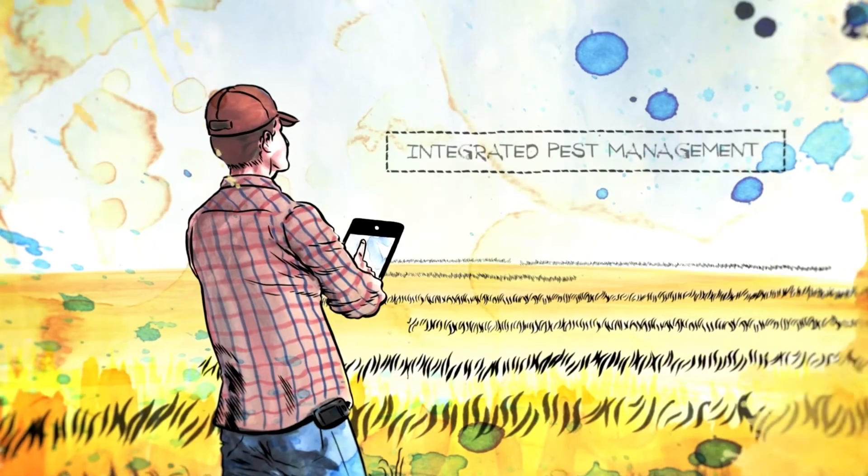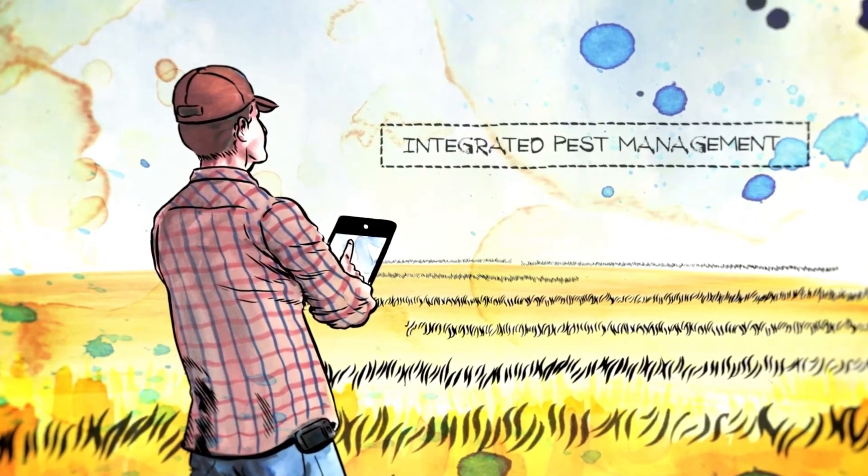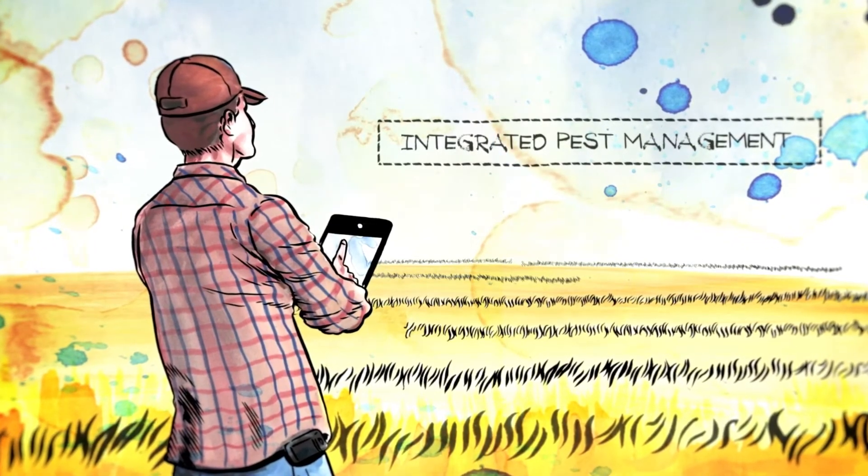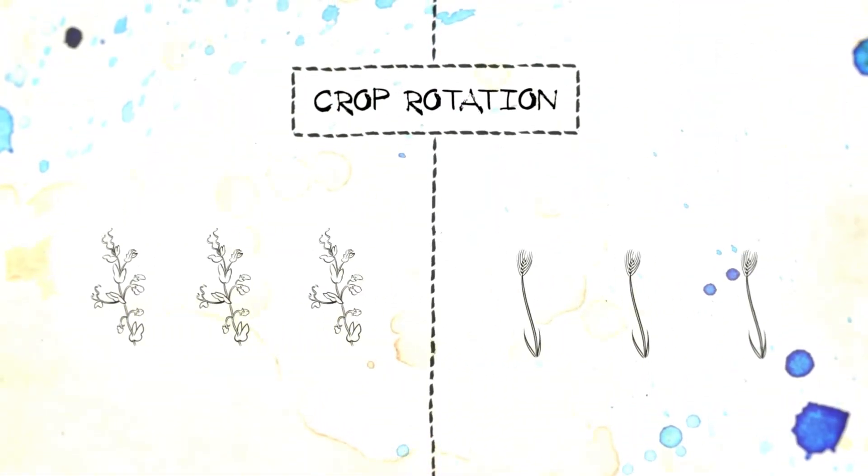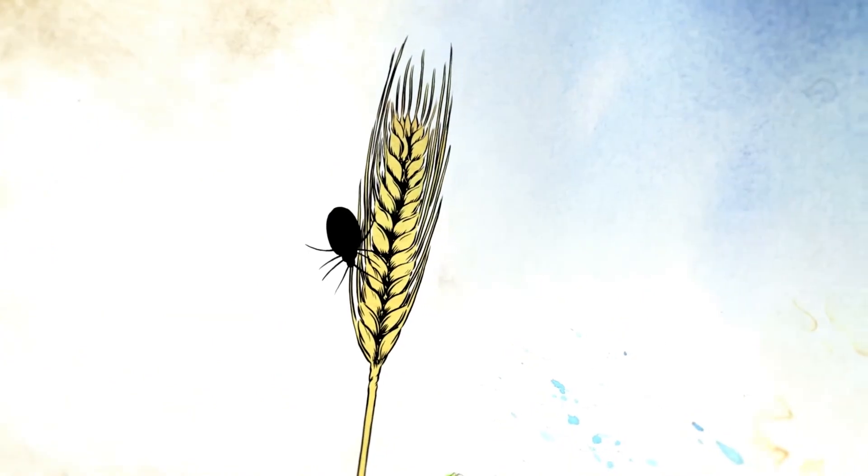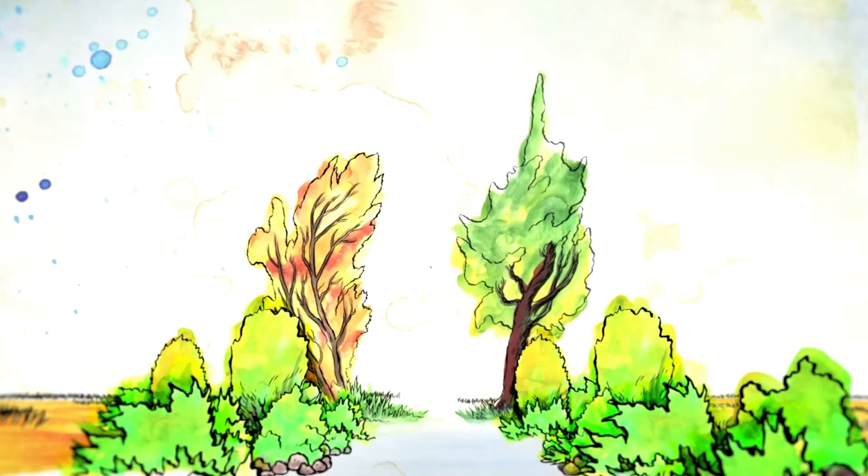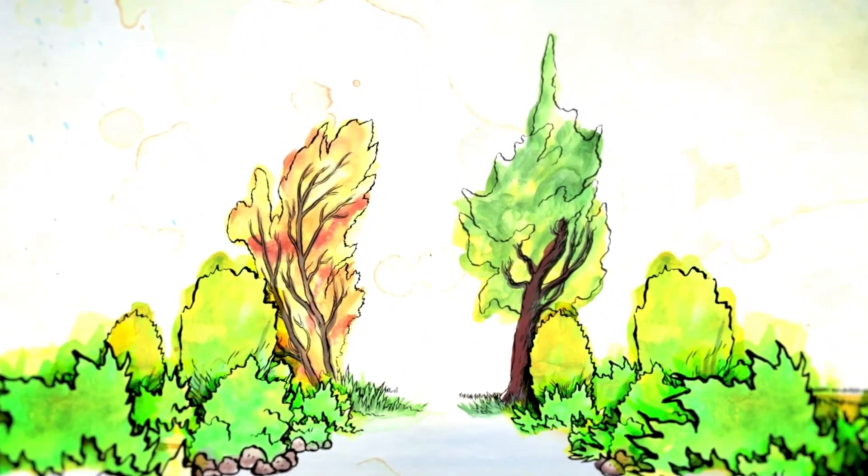The concept of IPM or integrated pest management is considered a best practice for farmers in making decisions on how to prevent and then control harmful infestations of weeds, insects or disease. IPM includes rotating crops from year to year, selecting insect and disease resistant varieties, adjusting the seed rate and timing of planting, and maintaining wetlands and riparian areas for biodiversity and ecological balance.